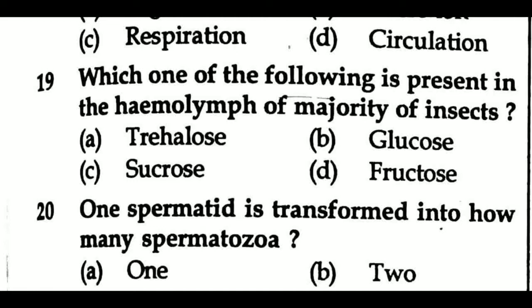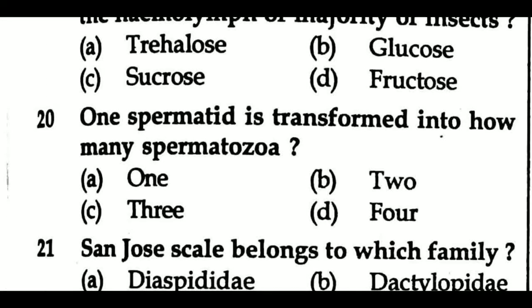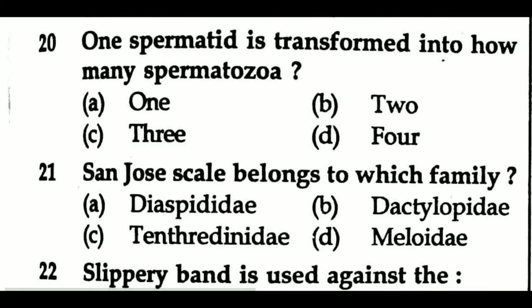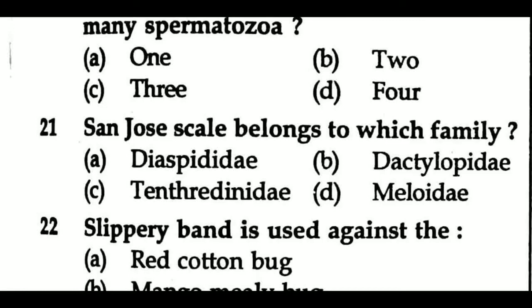Question 20: One spermatid is transformed into how many spermatozoa? Option A: one, Option B: two, Option C: three, Option D: four. Question 21: Sanjo scale belongs to which family? Option A: Diaspididae.